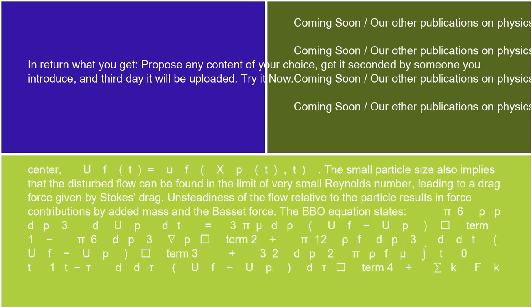Center: u_f(t) = u_f(x_p(t), t). The small particle size also implies that the disturbed flow can be found in the limit of very small Reynolds number, leading to a drag force given by Stokes' drag.